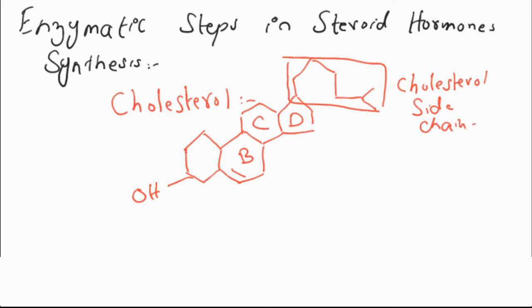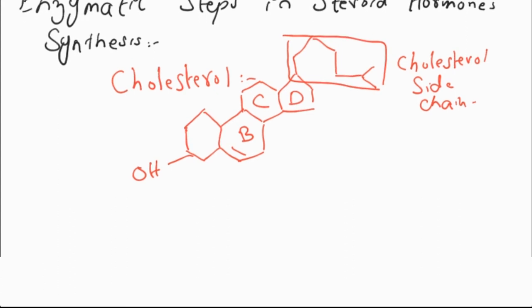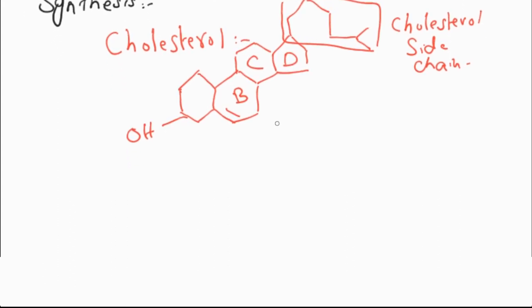The enzymes which are involved in the synthesis of steroid hormones are enzymes of the cytochrome P450 family. These enzymes are a superfamily of enzymes which are primarily present in the liver, but also present in endoplasmic reticulum and mitochondria.